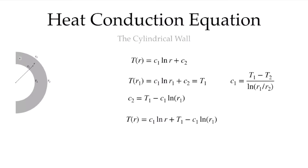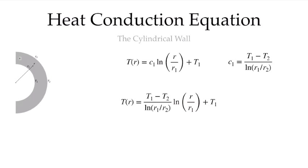Now we have a function for T as a function of r, which involves our c1. We can substitute that in and simplify. Noting that we're subtracting c1 ln(r1) from c1 ln(r), this simplifies to the logarithm of r over r1. We can put c1 into that expression to get our final solution.